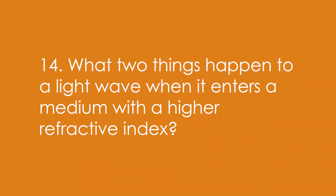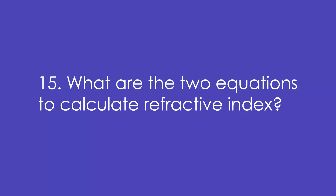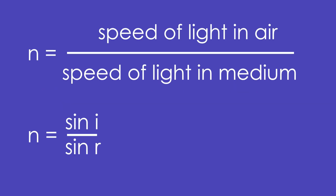14. What two things happen to a light wave when it enters a medium with a higher refractive index? It slows down and it bends towards the normal. 15. What are the two equations to calculate refractive index? The refractive index is the speed of light in air or a vacuum divided by the speed of light in the medium, or we can do sine I over sine R, where I is the angle of incidence and R is the angle of refraction.